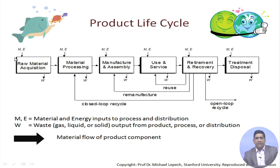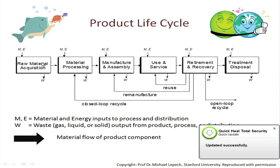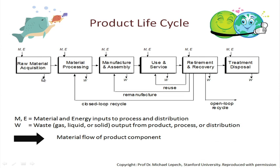The first box is raw material acquisition. Even for a simple pen, you have a cap, a nib, different types of plastics, possibly a spring made of metal, and ink to write — different types of materials and chemicals have gone into making it. So raw material acquisition is where we look at what different materials are needed to make any product.